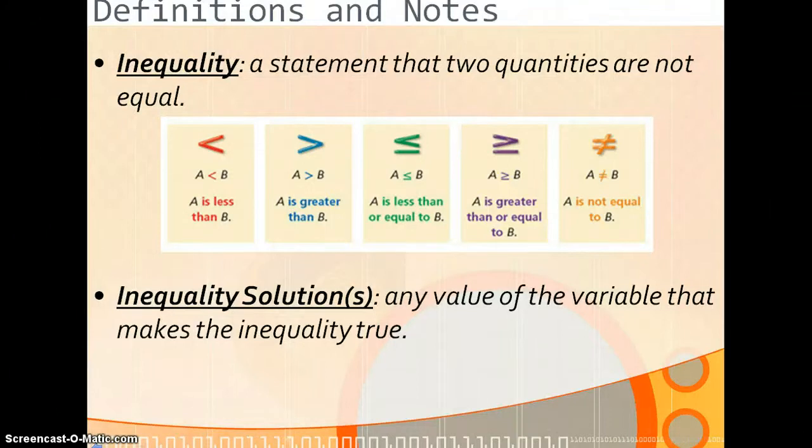Definitions and notes. An inequality is a statement that two quantities are not equal. The different symbols you'll see are less than, so A is less than B; greater than, A is greater than B; less than or equal to, meaning they can either be the same number or A would be smaller than B; greater than or equal to, so they can either be equal or A would be bigger than B; and is not equal to or does not equal, so A and B are not the same at all. That's not really an inequality, but that is explaining non-equality.